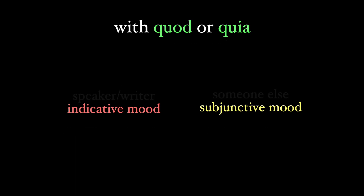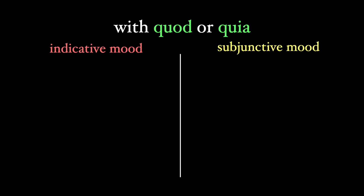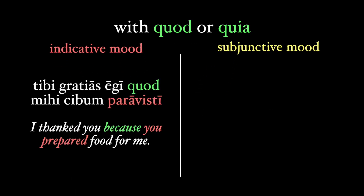So let's do a simple comparison. Tibi gratias egi quod mihi cibum paravisti — I thanked you because you prepared food for me. Here, I am assured of the fact that you prepared food for me, so we use the indicative mood for the perfect tense paravisti.